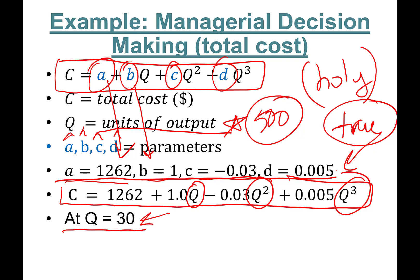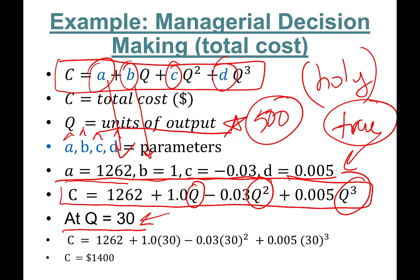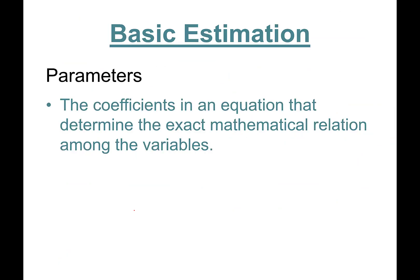If you plugged in Q = 30, you should have your answer. Substituting all the values, the cost of producing 30 units comes out to $1,400. For example, think of it as a bakery — the cost of baking 30 elaborate cakes is going to be $1,400.